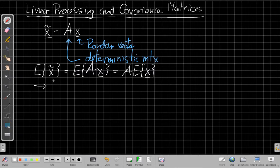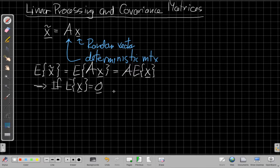Which has an important implication for us, which is that if the expected value of the original data is zero, a vector of zeros, so is the expected value of the transformed data. So if I have zero mean data and I apply a linear operator to it, I still get zero mean data out.